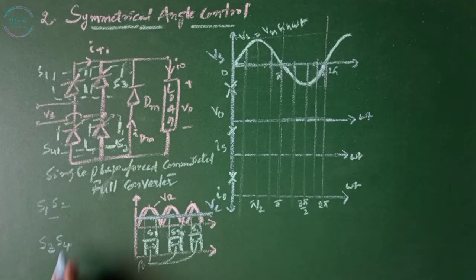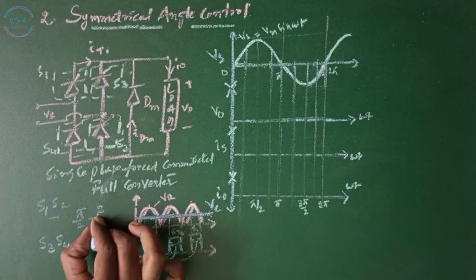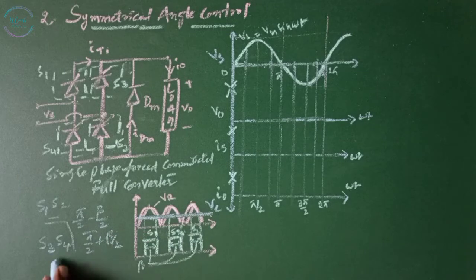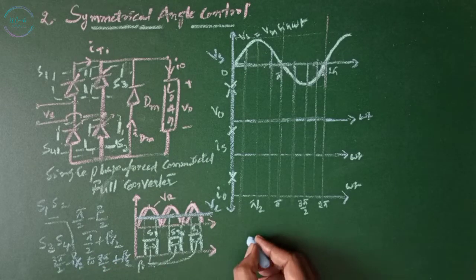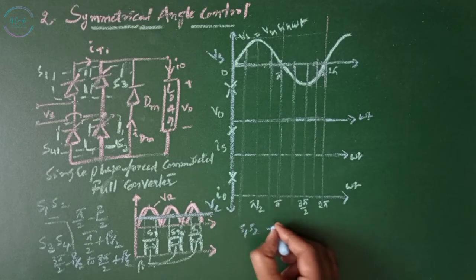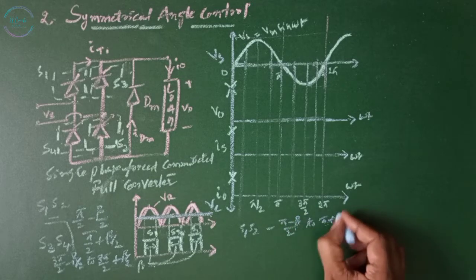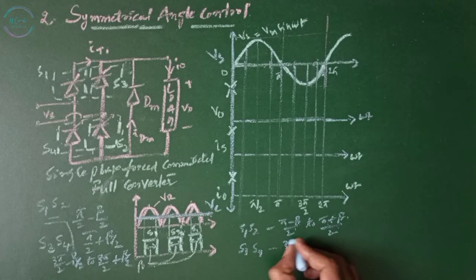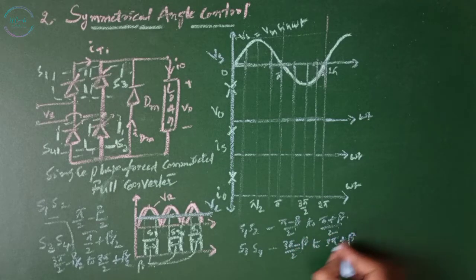We need to turn on the S1, S2 combination in the positive half cycle at pi/2 minus beta/2 and turn off at pi/2 plus beta/2. S3 and S4 conduct from 3pi/2 minus beta/2 to 3pi/2 plus beta/2. In simple terms, S1 and S2 conduct from pi minus beta/2 to pi plus beta/2, and S3 and S4 conduct from 3pi minus beta/2 to 3pi plus beta/2.